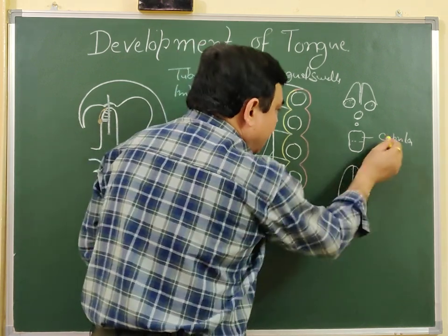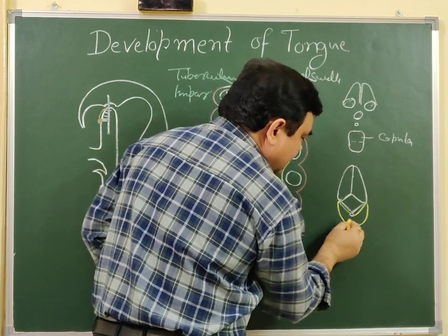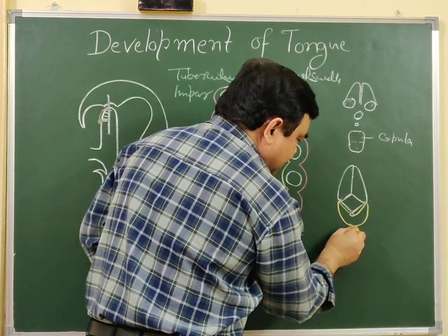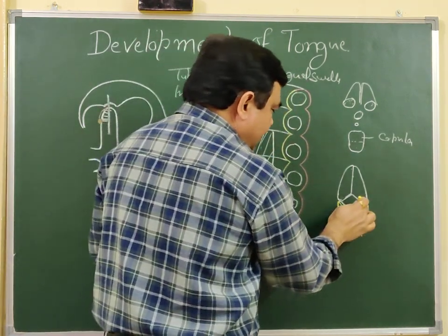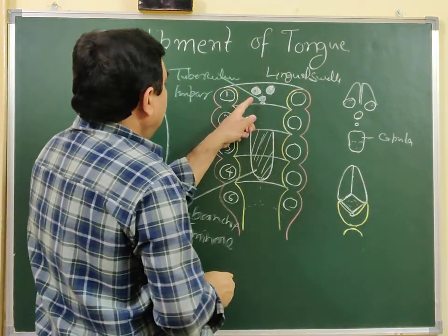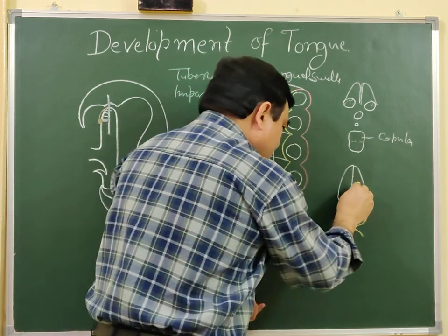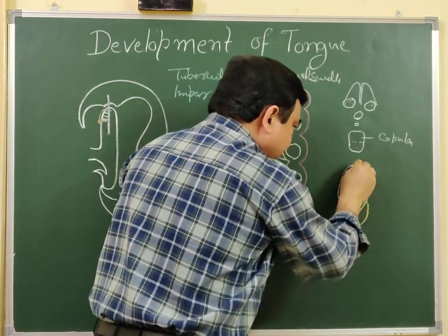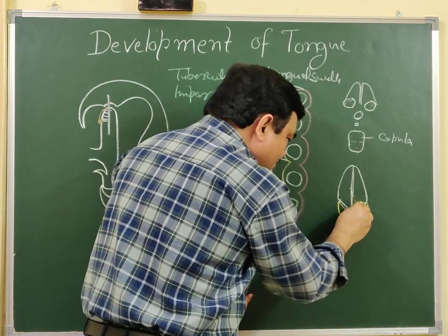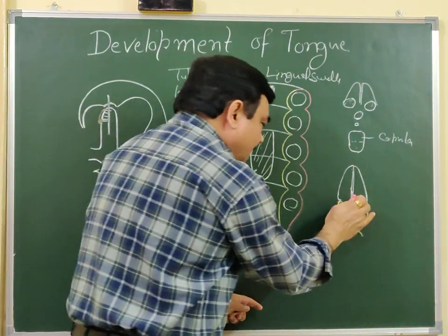The foramen cecum is positioned here. This is the copula. And this corner part is the epiglottis. Gradually, the portion which develops from the tuberculum impar becomes reduced in size and disappears. Sometimes it persists as a smooth area. Sometimes it persists like a reddish smooth area, but mostly it disappears.